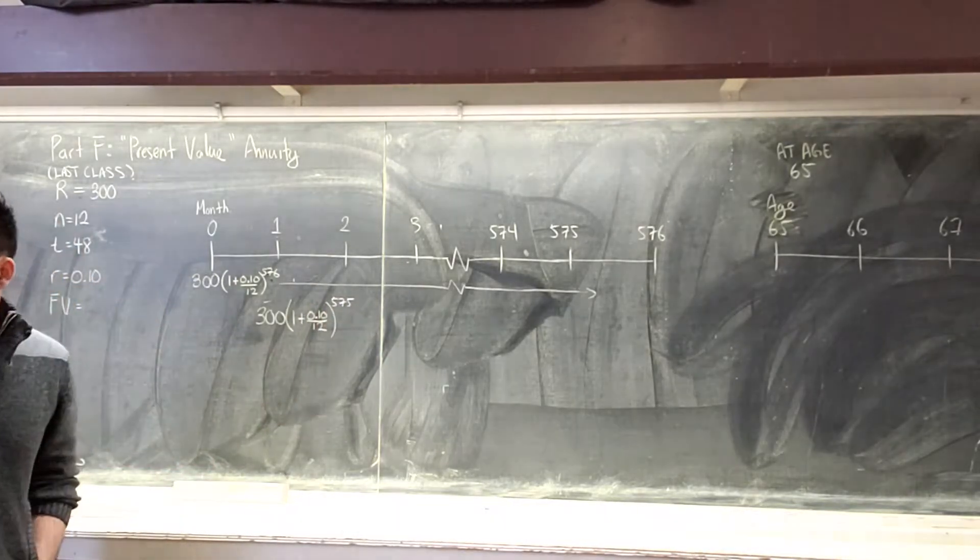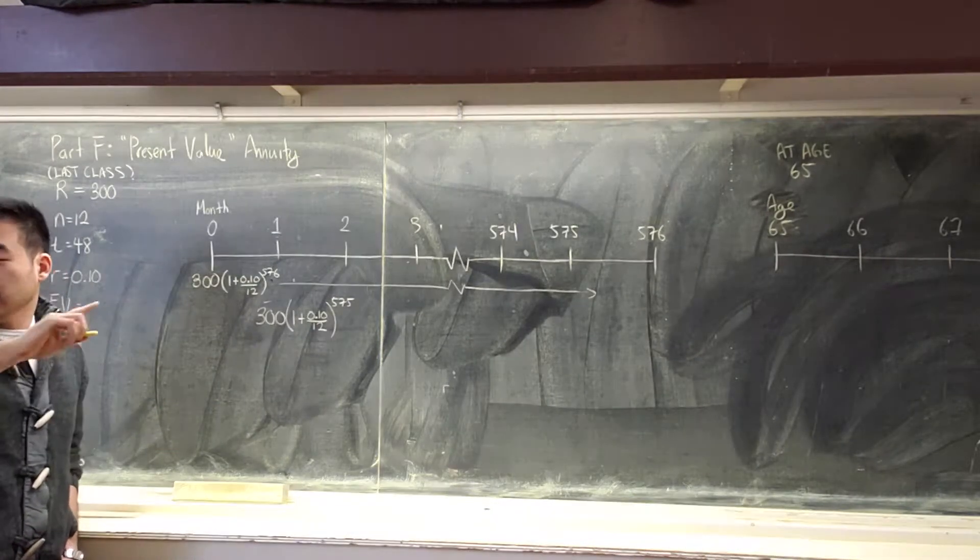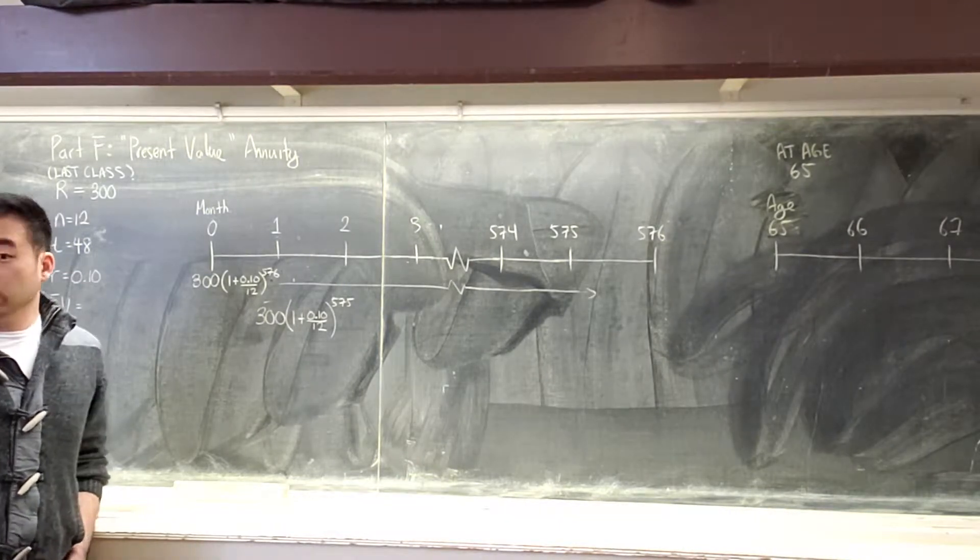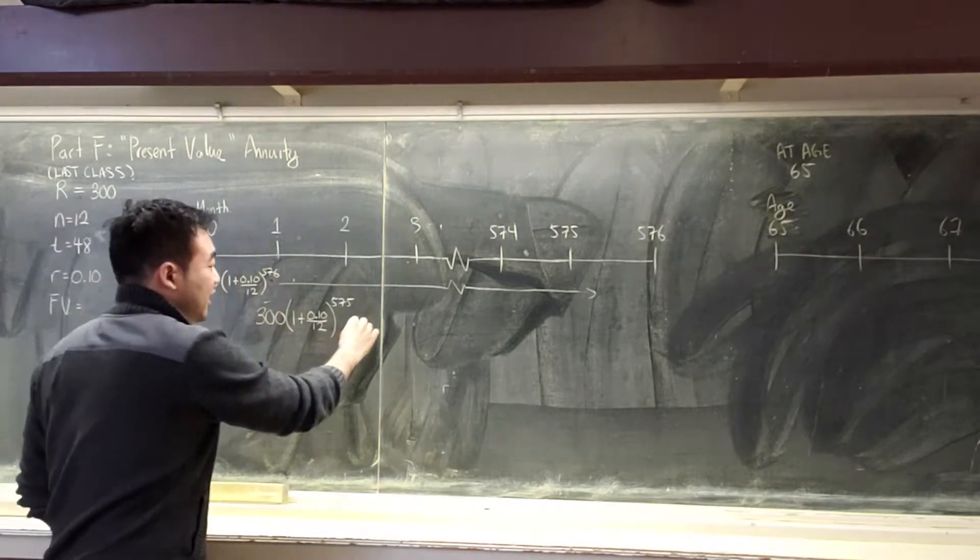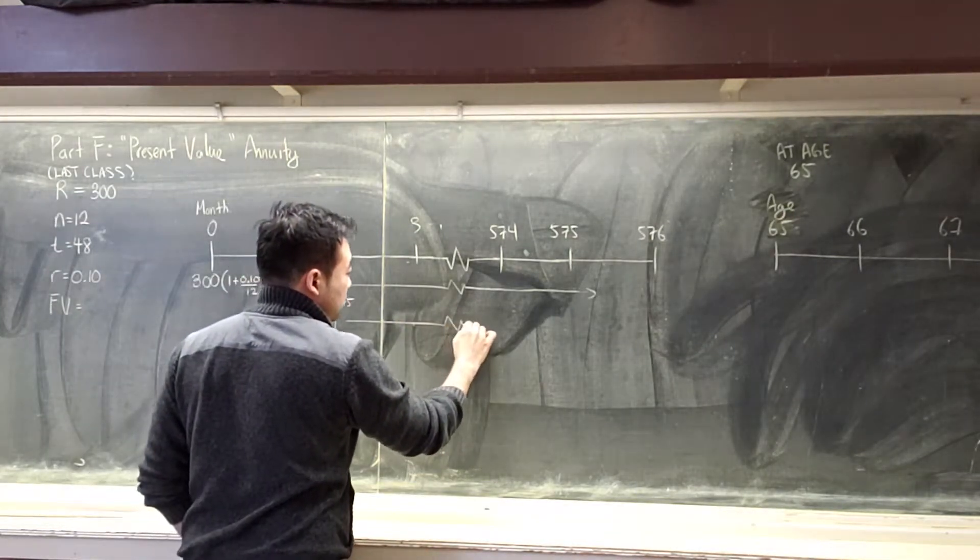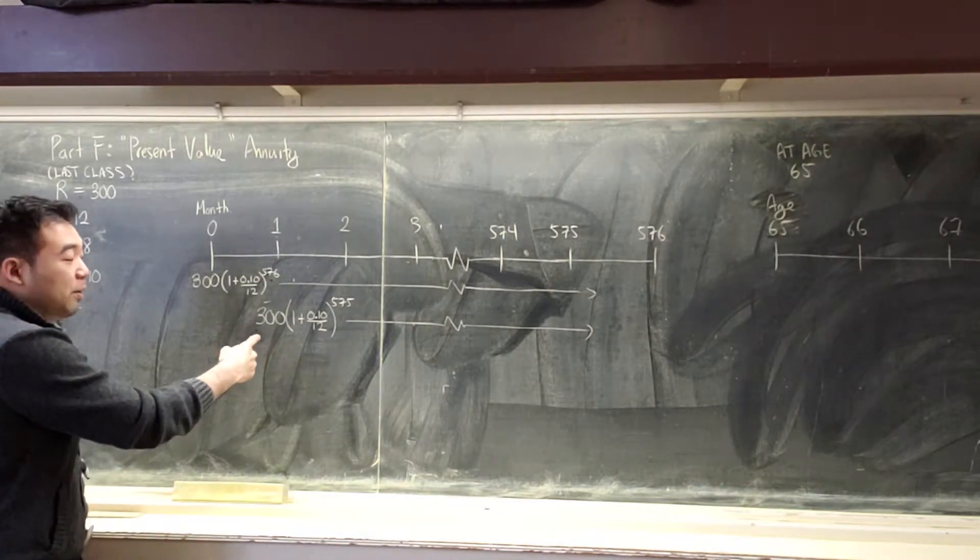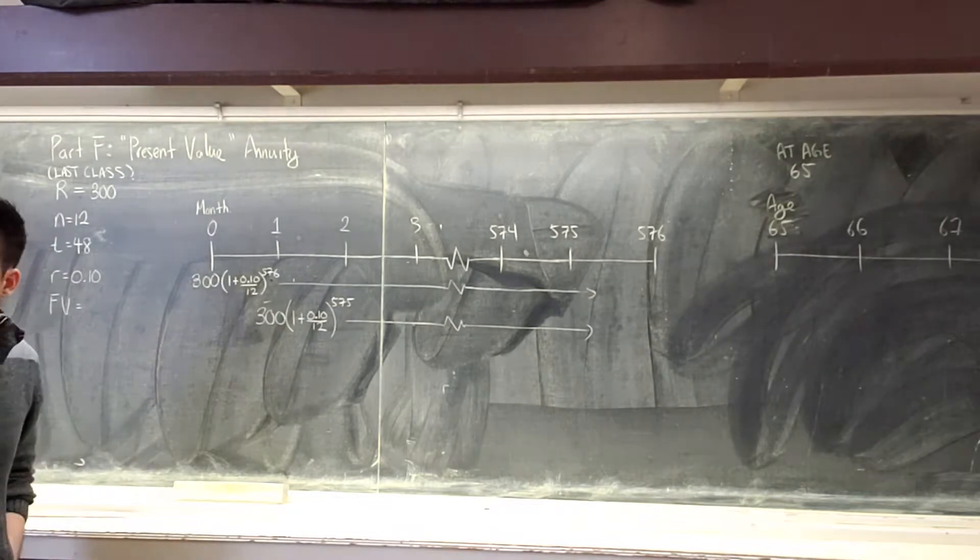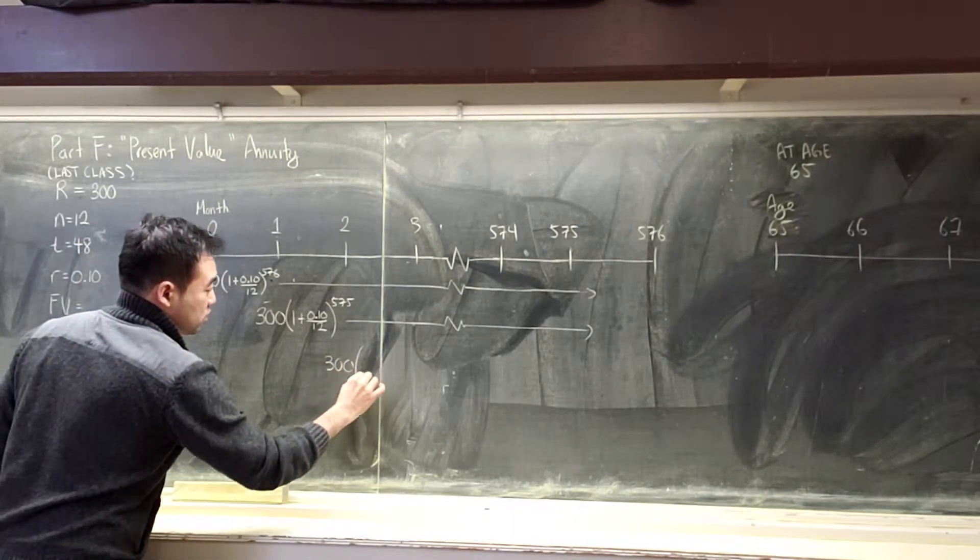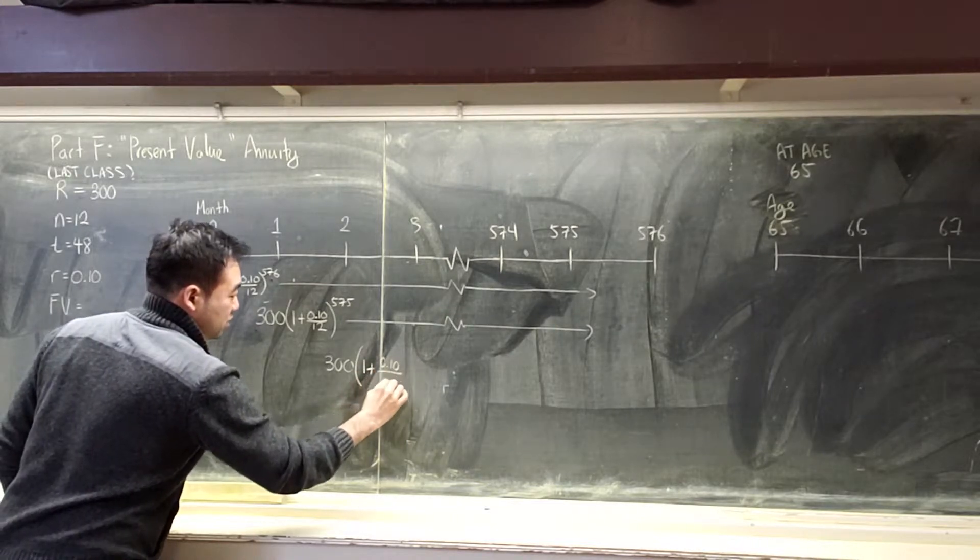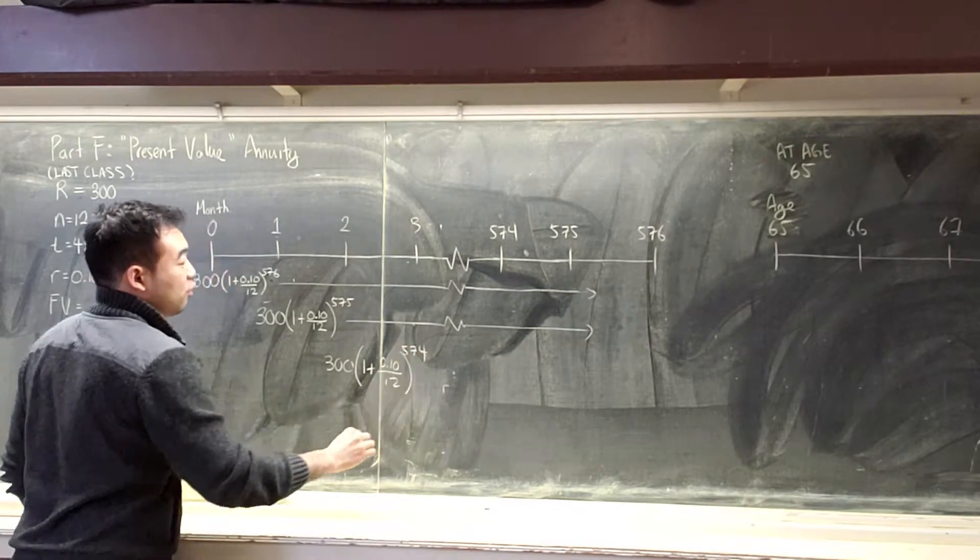So somebody else, can you do the first one for me? Morgan, if you could, do you have a calculator? Who has calculated? Ethan, can you do the second one for me? I'd like to see what this turns into. By the time we get to age 68, that's 65. And the month after that, once again, you're being responsible. You put in another $300. And that's going to earn the same interest rate, of course, but for 574 months.